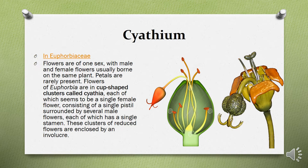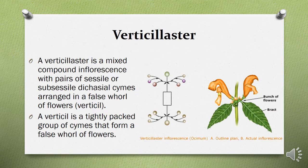The last special type of inflorescence is verticillaster. It is a mixed compound inflorescence with pairs of sessile or subsessile dicasial cymes arranged in a false whorl of flowers, called a verticil. These were all the types of inflorescence discussed in detail.